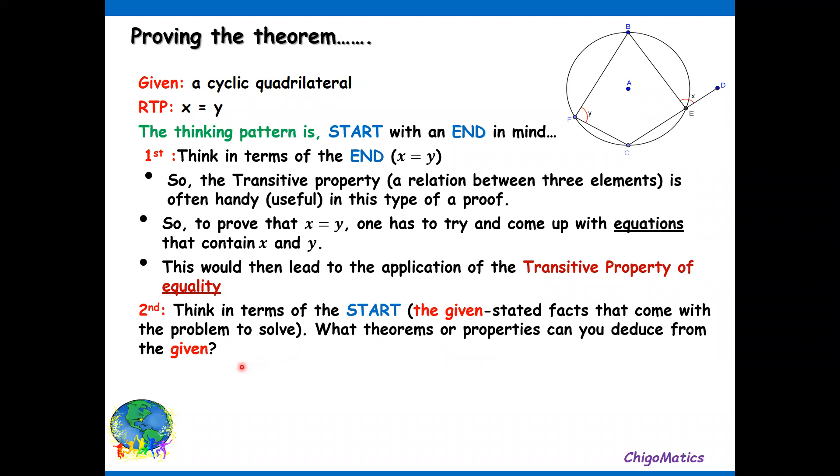We see that CED is a straight line, so you use adjacent angles on a straight line. BECF is the cyclic quad, use then opposite angles of the cyclic quad are supplemental. This will allow you to formulate the required equations.